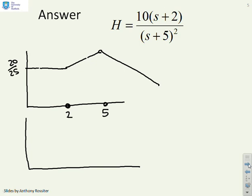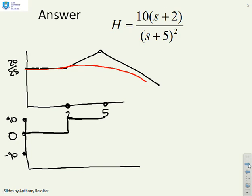Now it's not immediately obvious what this gain plot is going to do — it's going to be something like that. What about the phase? We've got a starting phase of 0. We've got an asymptote that goes up to 90 and then down to minus 90. The phase asymptotes are going to do something like that, and if I actually plot the phase, it's going to be something like this.